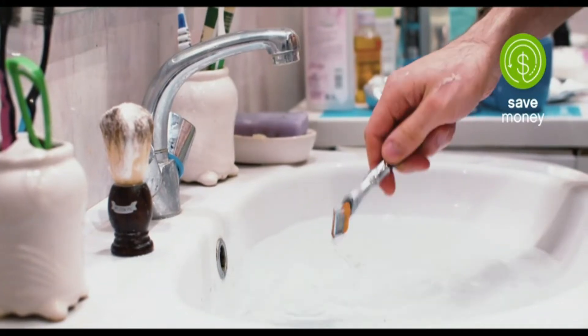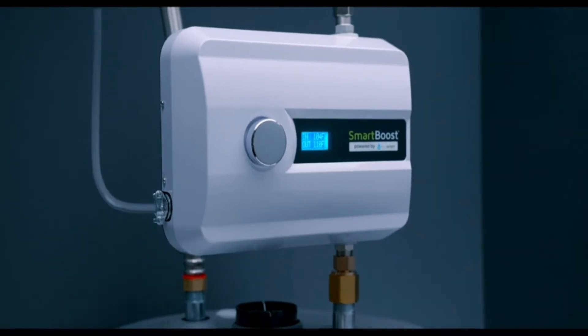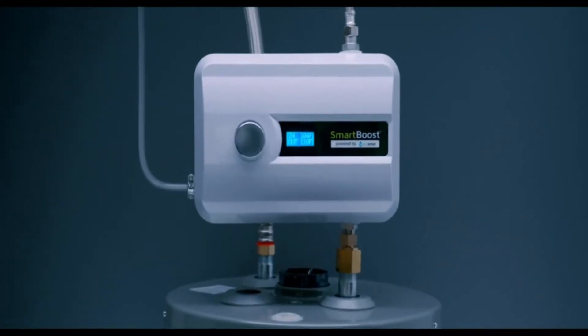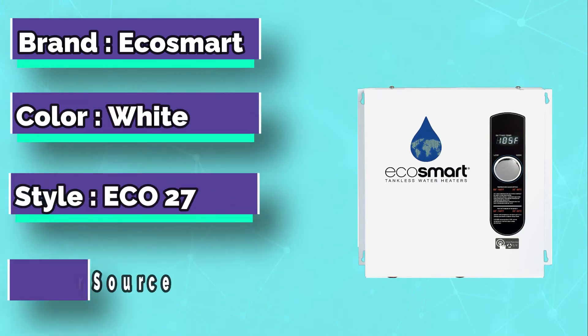Ecosmart Eco Tankless Water Heaters have several models with different wattage but basically the same engineering, and are designed to be very eco-friendly. First of all, the Ecosmart Eco 27 weighs less than 11 pounds,